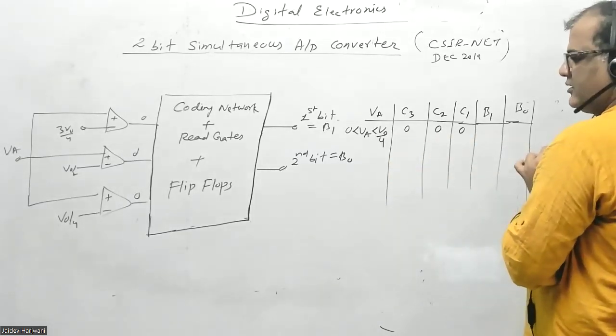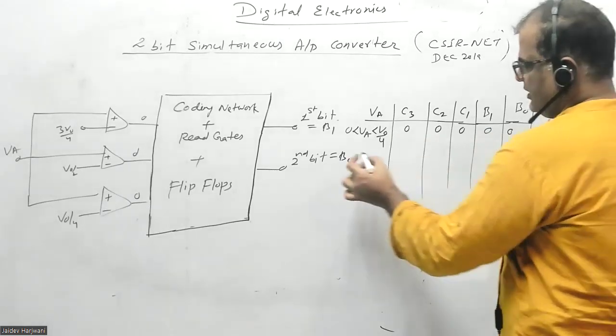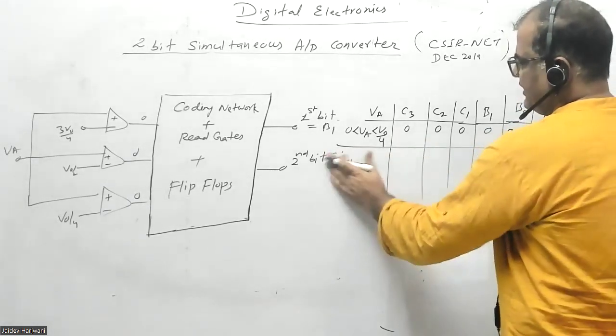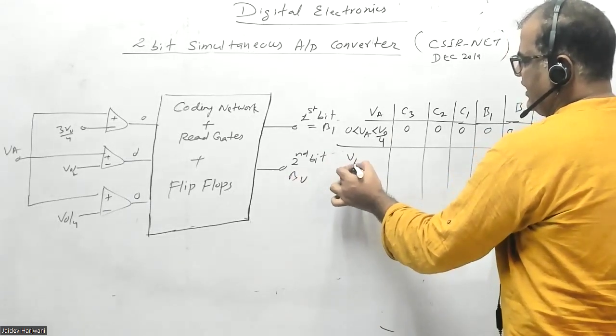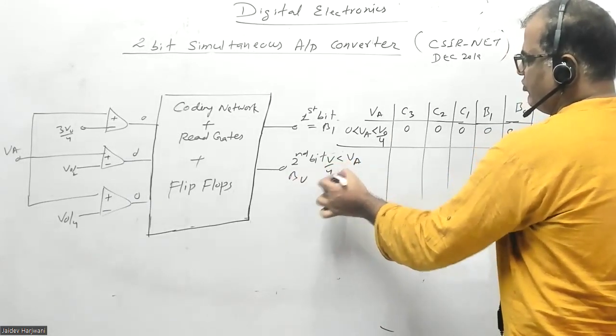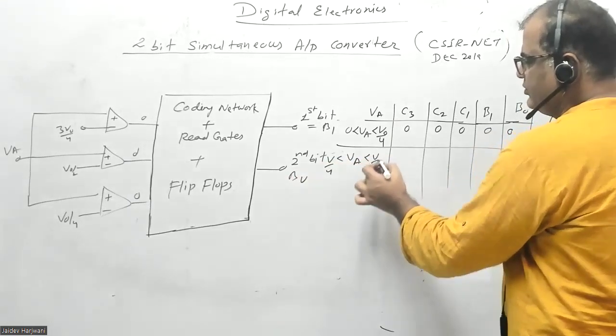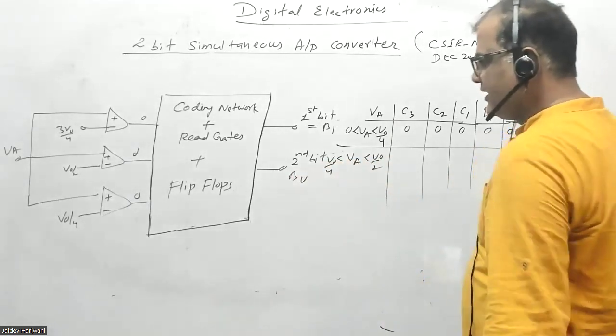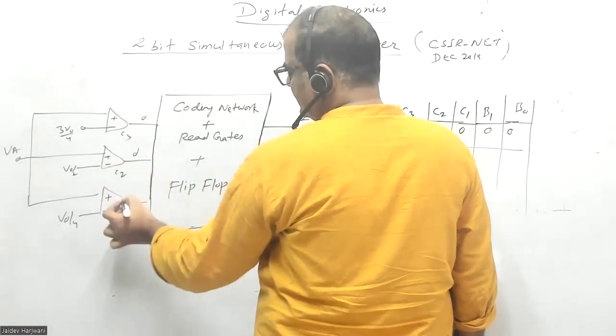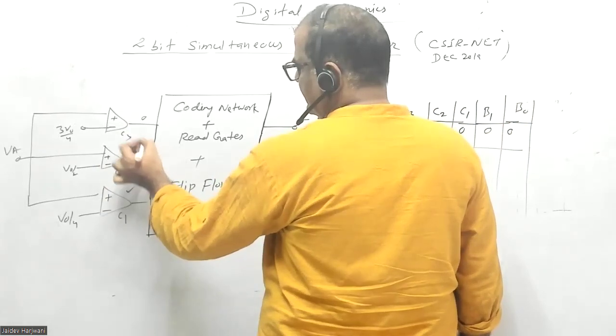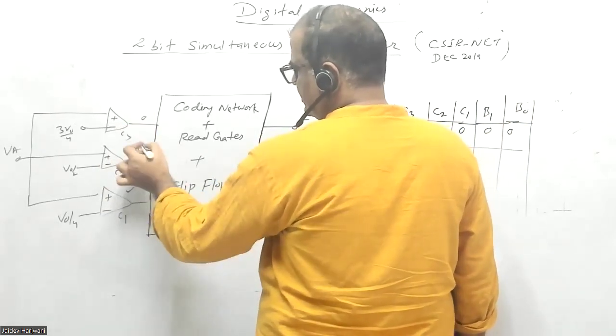In the second case, when VA is greater than V0/4 but less than V0/2, the output C1, C2, C3 becomes: this becomes high, this becomes zero, and this becomes high.